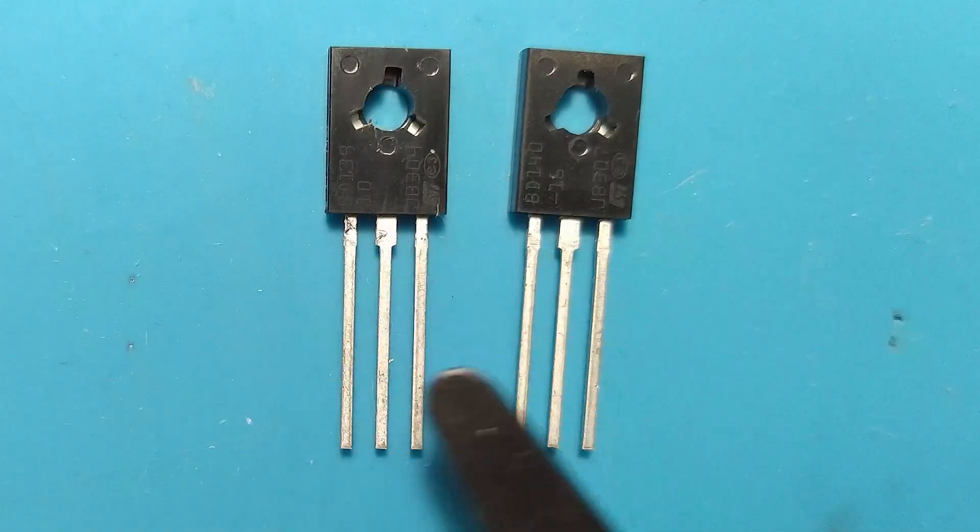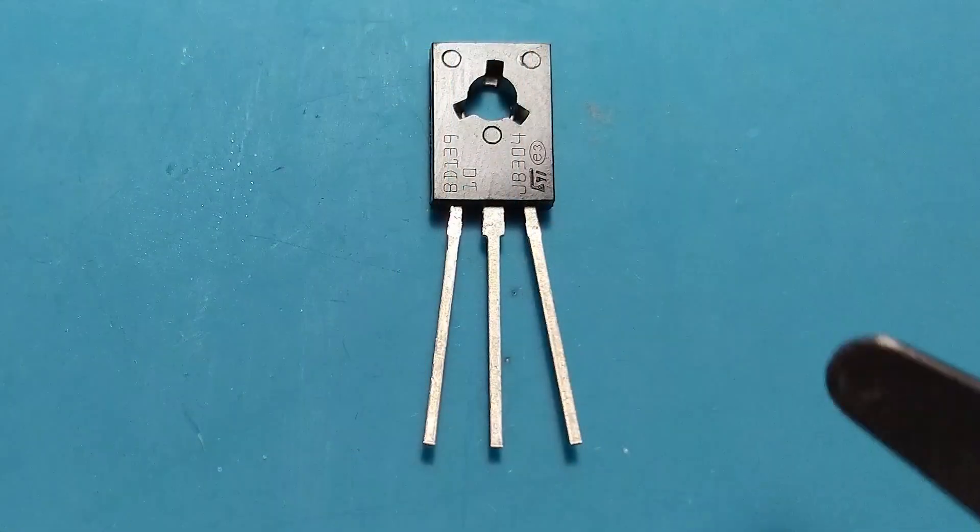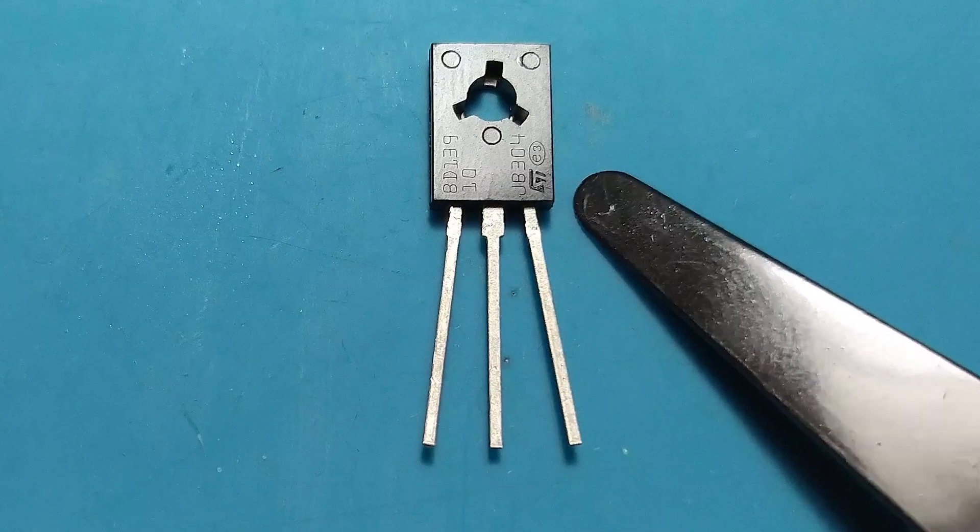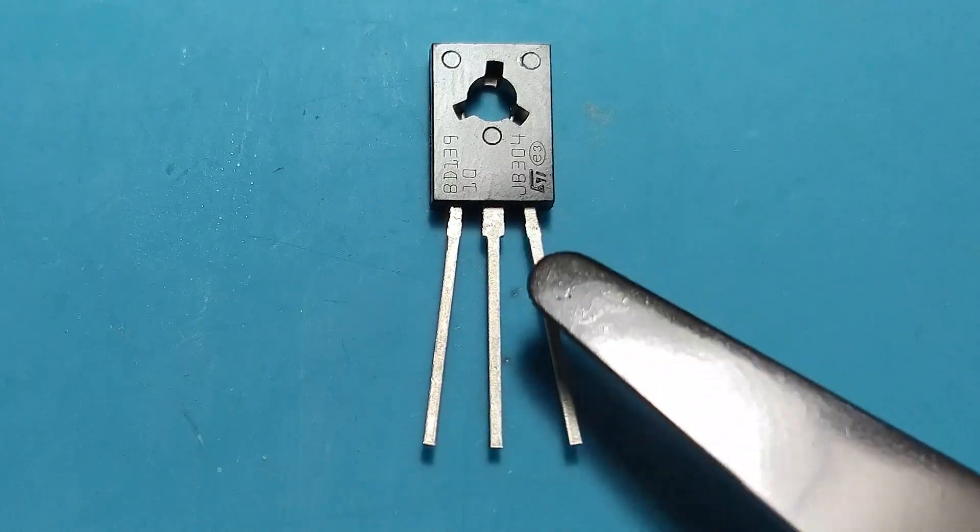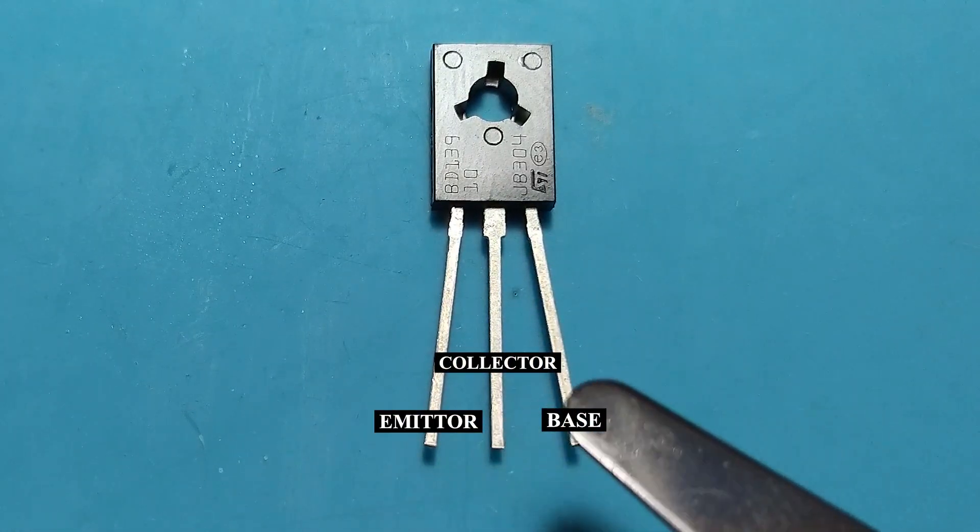The pin configuration of the front transistors is as follows. Looking at the transistor with the marked area facing us and the terminals facing down, from left to right, we have emitter, collector and base.